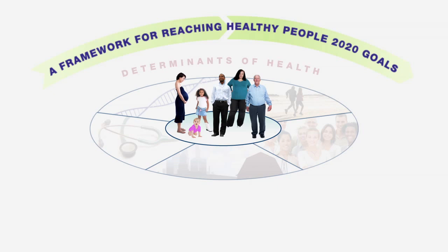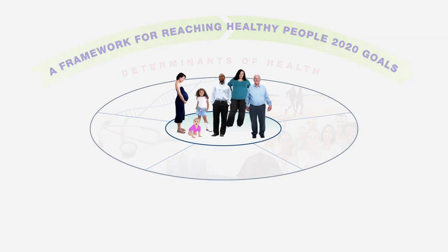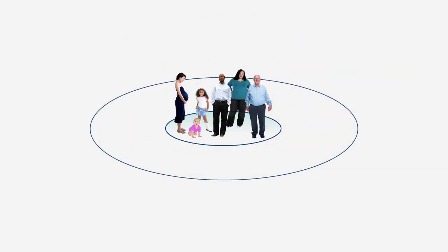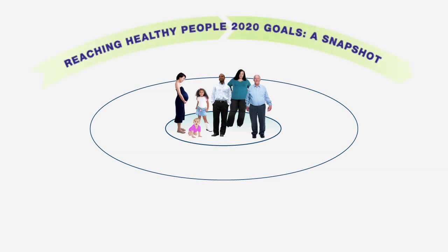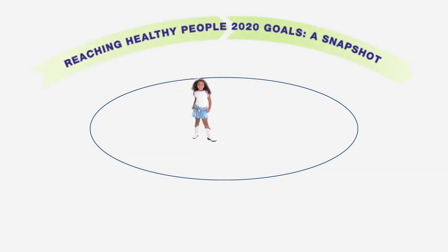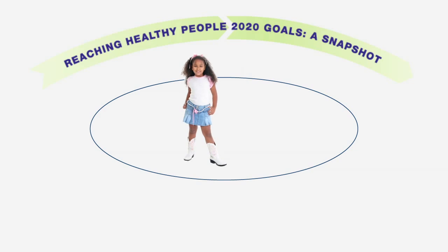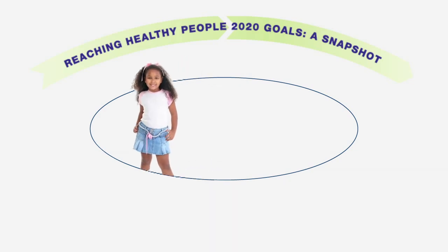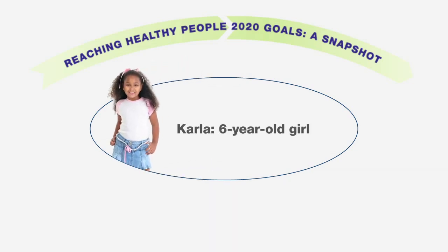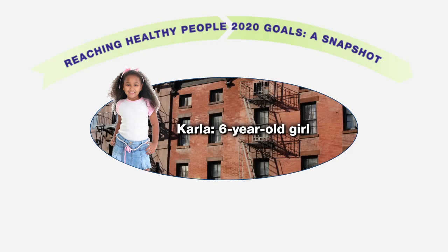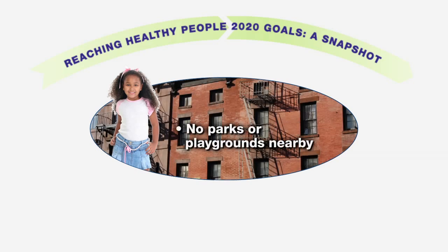Healthy People 2020 places new emphasis on the social determinants of health, while continuing to address the full range of determinants. Health starts in our homes, schools, and communities. Let's take a closer look at how determinants of health can affect our lives. Meet Carla, a six-year-old African-American girl. Carla lives in an urban area and doesn't have any parks or playgrounds close to her apartment building.